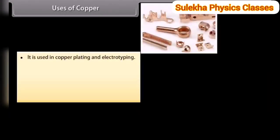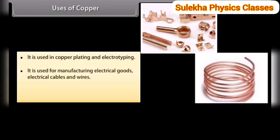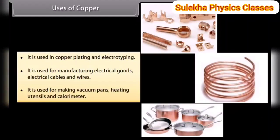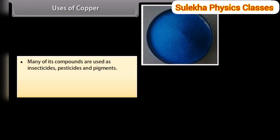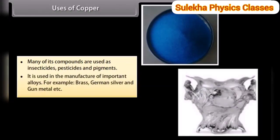Uses of copper. It is used in copper plating and electrotyping. It is used for manufacturing electrical goods, cables and wires, vacuum pans, heating utensils and calorimeters. Many of its compounds are used as insecticides, pesticides and pigments. It is used in the manufacture of important alloys such as brass, German silver and gunmetal.